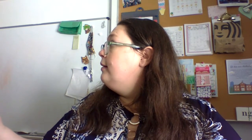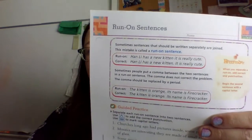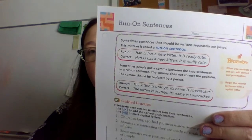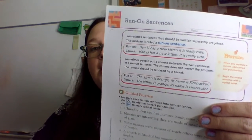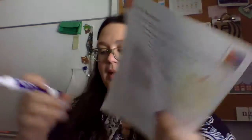Then you're going to do run-on sentences. 'Han Lee has a new kitten it is really cute' — those are two run-on sentences. Make sure that when it's like two different ideas, you don't want those two different ideas to be in one sentence. One sentence is one idea. Two ideas is two sentences.